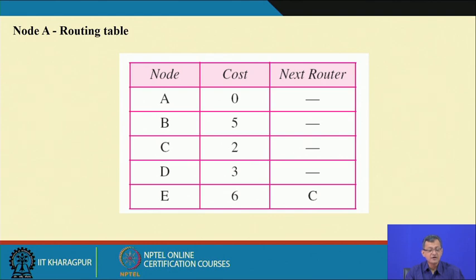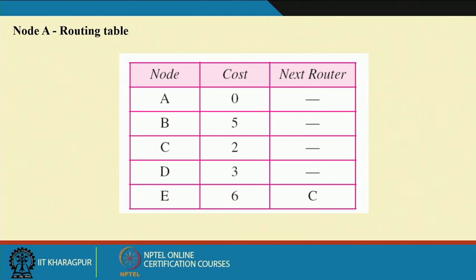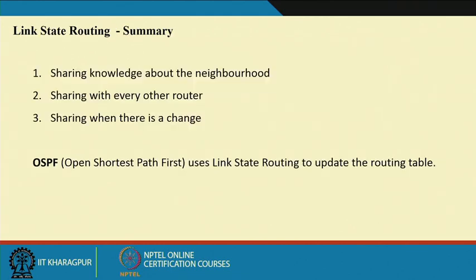Looking at A's routing table: reaching node A is cost 0, B is 5, C is 2, D is 3, and E is 6 via C. This table is constructed using link state information and can be used for forwarding packets. To summarize link state: share knowledge about the neighborhood, share it with every other router, and share when there is a change. One popular link state routing protocol is OSPF — Open Shortest Path First — which uses this link state protocol to update the routing table.